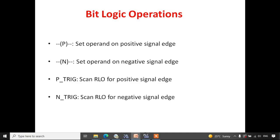In this session we are going to see positive edge signal detection and negative edge signal detection. There are two ways to do the same. Here we have the set operand on positive edge signal — this instruction is used for positive edge detection — and similarly this one is used for negative edge detection. These are also the same blocks. We'll be seeing one by one how to use them, and first let us discuss what is the meaning of positive and negative edge detection.